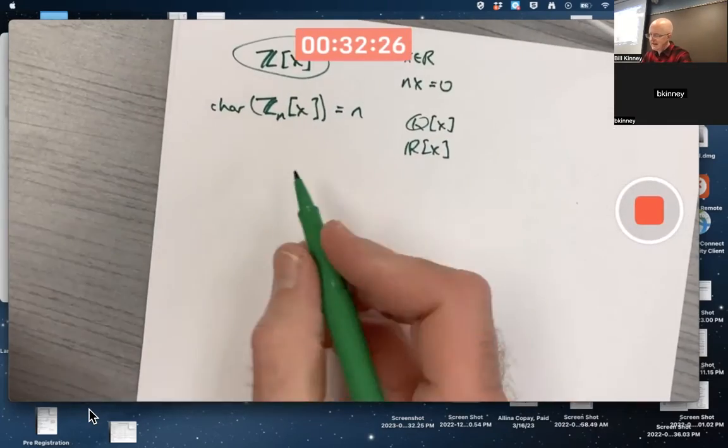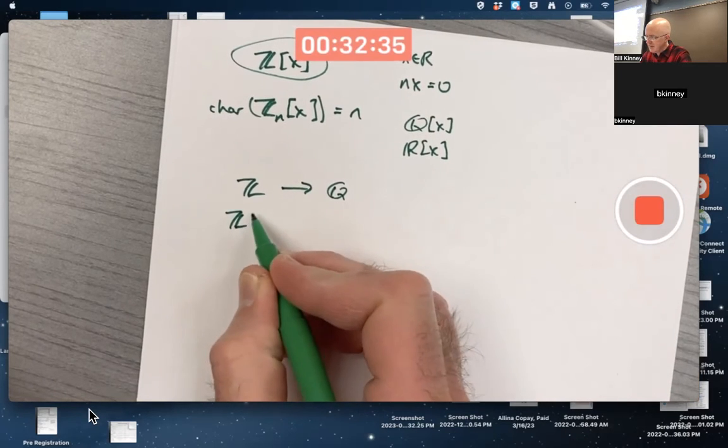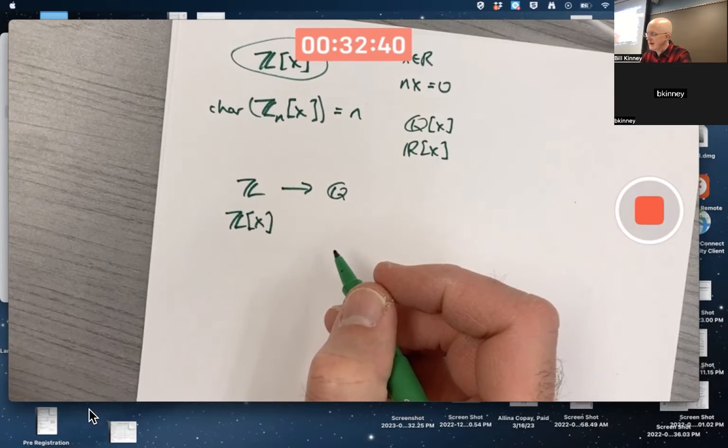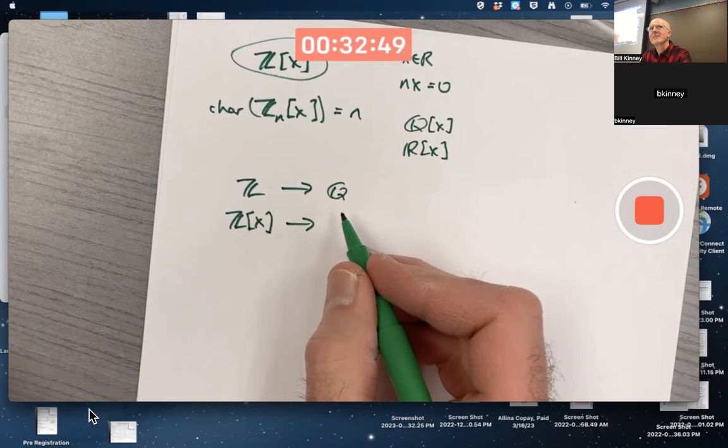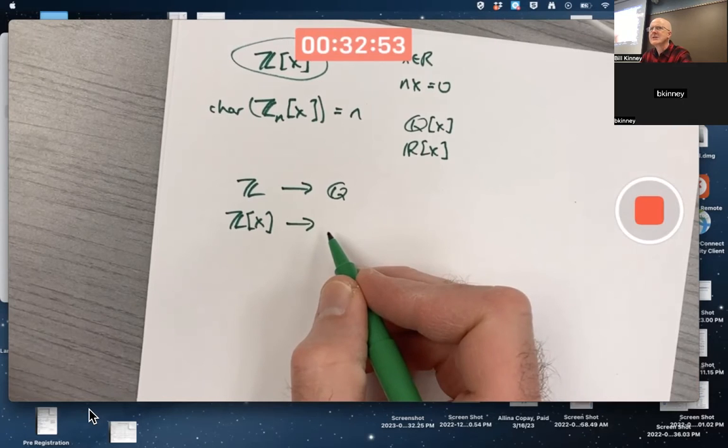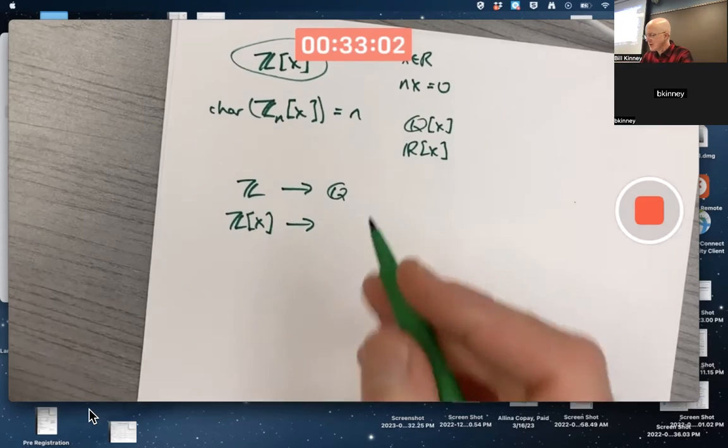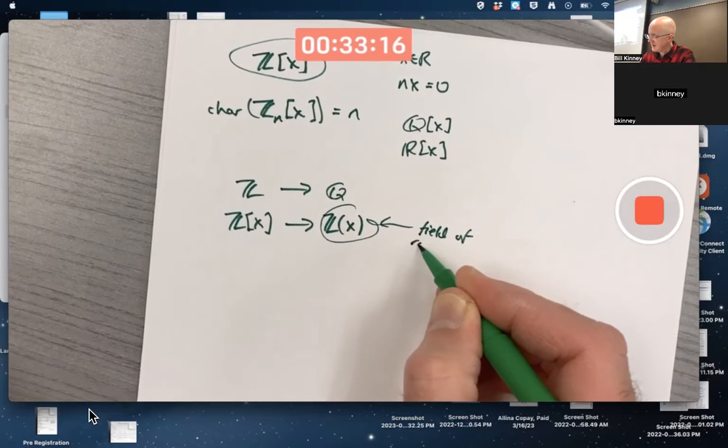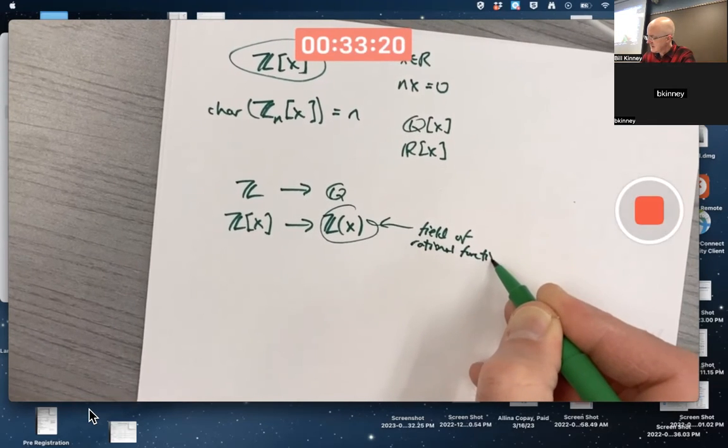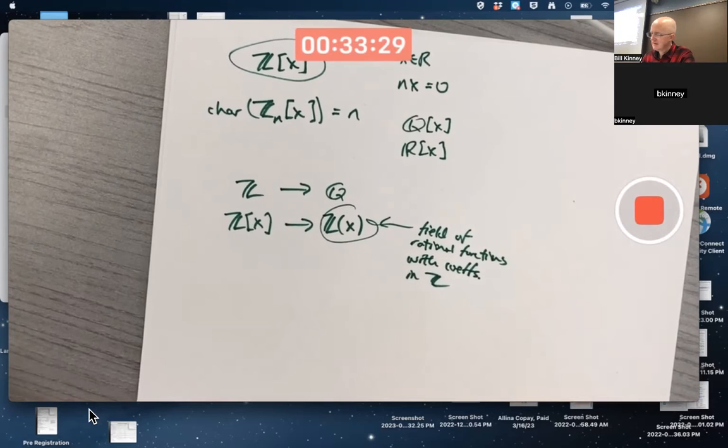Just like we can take integers and create fractions of integers to get rationals. So we can take, for example, the ring of polynomials with coefficients in Z, which is an integral domain, and create fractions of those things, rational functions instead of rational numbers. Do we call it Q[X]? No, we don't because the coefficients in the numerator and denominator polynomials are still integers. Standard notation for it is this. Z(X) with parentheses instead of square brackets. This turns out to be the field of rational functions with coefficients in Z.